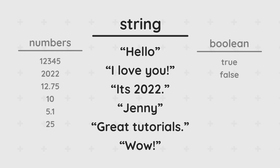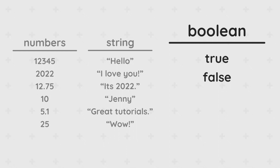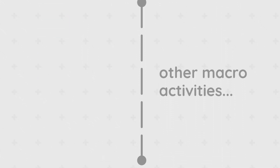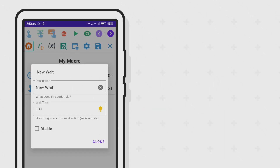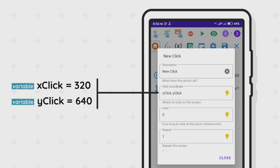Numbers include both whole numbers and decimal numbers. A string is basically text — a sequence of characters. A boolean is a data type with only two states: true or false. A variable's value can be modified at any point in the macro, even with a value of a different data type. One advantage of using variables is that the value can be passed into any option in Macrorify that accepts that data type — for example, controlling the coordinates of click points with variables.